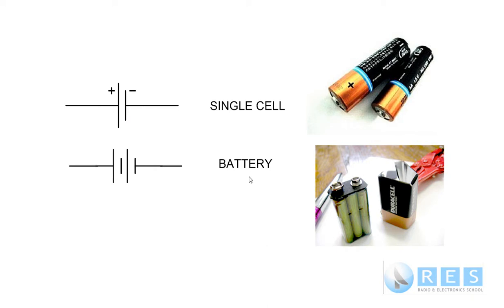A battery is a group of cells, and so the symbol for a battery looks different. In the picture we have a nine-volt transistor battery. If we take it apart and break it open, we can see there are six individual 1.5-volt cells. Six times 1.5 gives us nine volts. So that's the symbol for a battery, and this is the symbol for a cell.